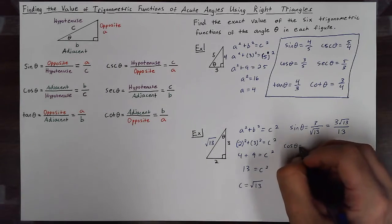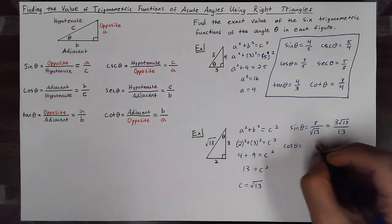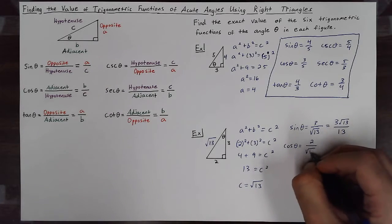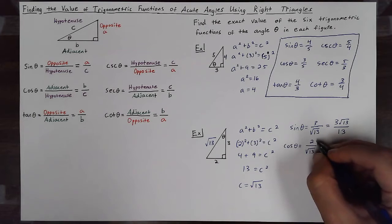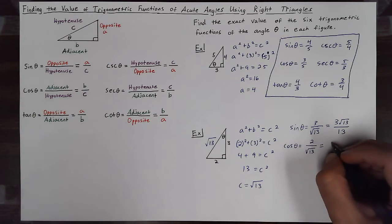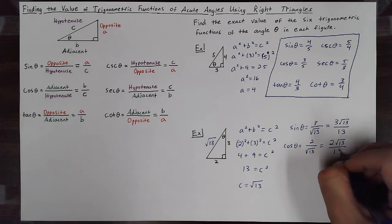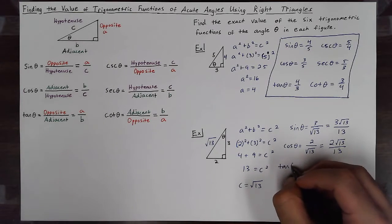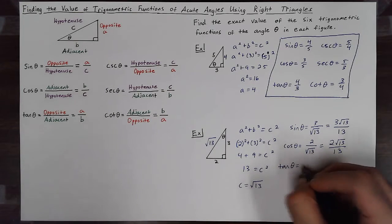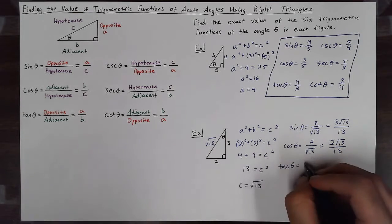Cosine of theta will be adjacent over hypotenuse, so two over the square root of 13. Rationalizing that denominator by multiplying numerator and denominator by the square root of 13 gives me two square roots of 13 over 13. Tangent of theta will be opposite over adjacent, so three over two.